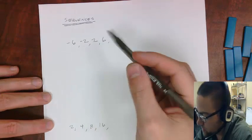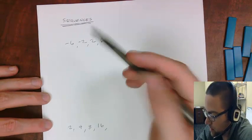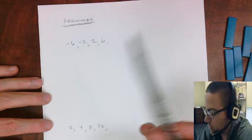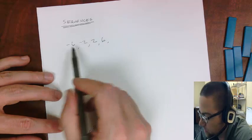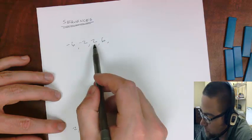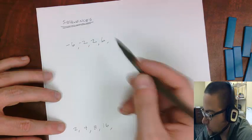Hello everybody, welcome back. We're going to talk a little bit about sequences and what they look like in their patterns. So here's one where it's negative 6, negative 2, 2, 6. So what's the next number?